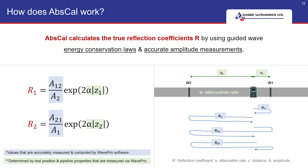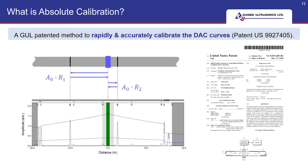Absolute calibration is accurate because it calculates the true reflection coefficient of the welds in the actual inspected pipe. This is performed by using guided wave energy conservation equations and leveraging on accurate amplitude measurements using the WaveMaker GUL screening system. The absolute calibration method is patented and is only available in GUL screening systems, which includes the WavePro software.